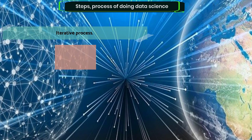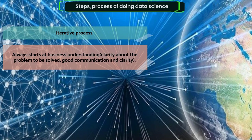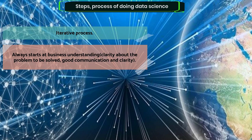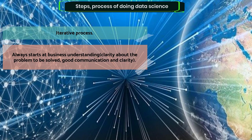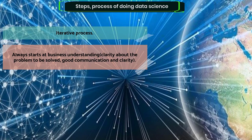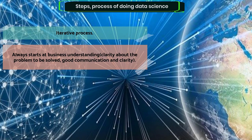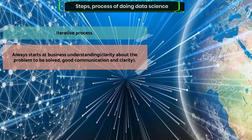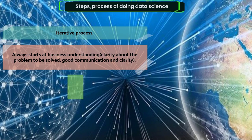The methodology always starts with business understanding — getting clarity about the problem to be solved. This is arguably the most important step. If you get it wrong right off the bat, the other steps are in large part useless. It requires good communication and clarity. A common problem at this stage is diverging objectives, because you have different stakeholders involved in the business, each with their own biases. You need to hash all of that out before moving to step two.